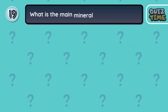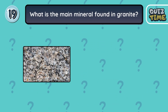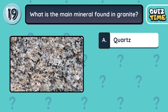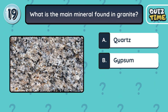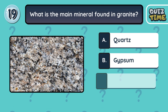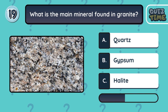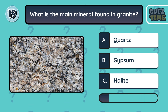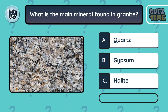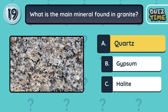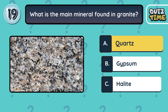Number 19. What is the main mineral found in granite? A. Quartz. B. Gypsum. C. Halite. The correct answer is A. Quartz.